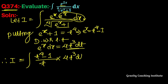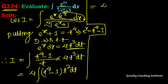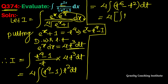4 is a constant so we take it outside. This becomes t to the power 4 minus 1, and t cubed divided by t gives t squared. So equal to 4 into integration of (t to the power 6 minus t squared), which equals 4 into integration of t to the power 6 dt minus integration of t squared dt.